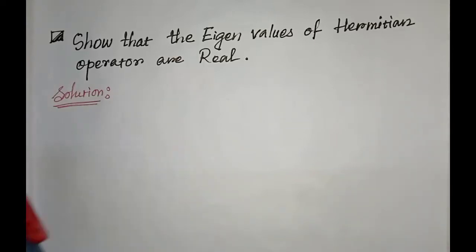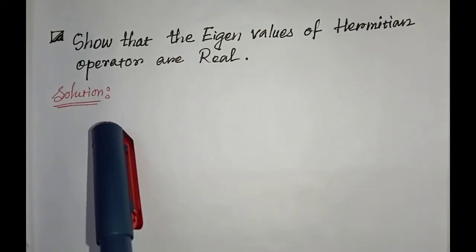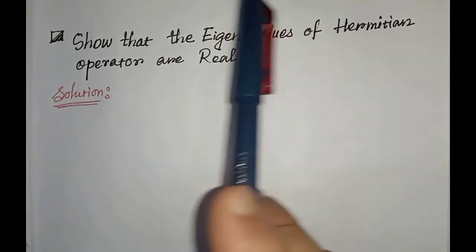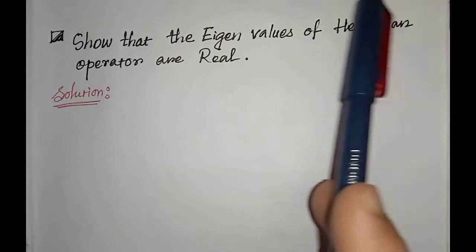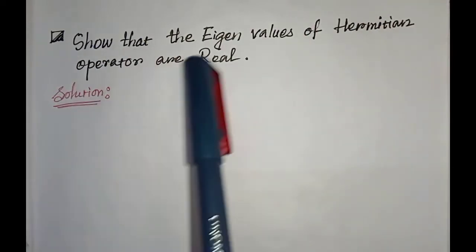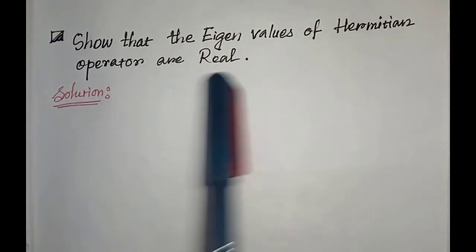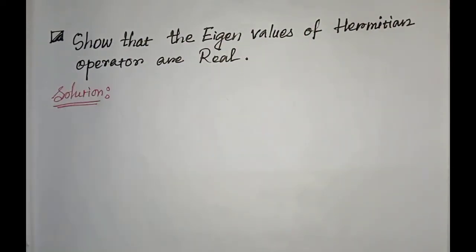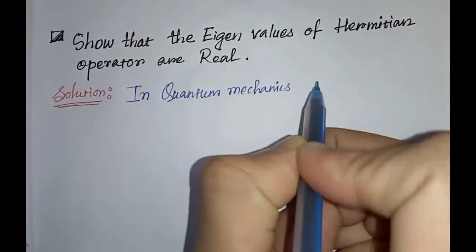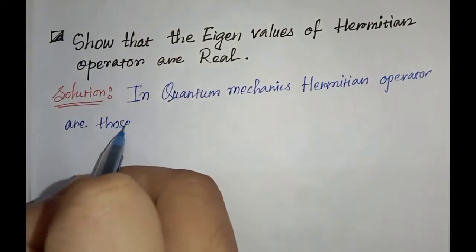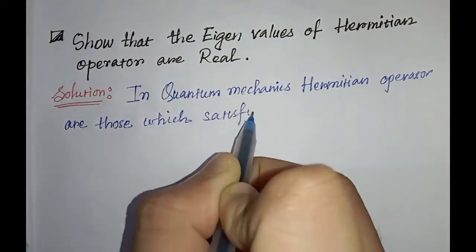Hello everyone. In this video we will prove that in quantum mechanics the eigenvalues of a Hermitian operator are real. First of all, let's define what a Hermitian operator is in quantum mechanics — Hermitian operators are those which satisfy the following property.